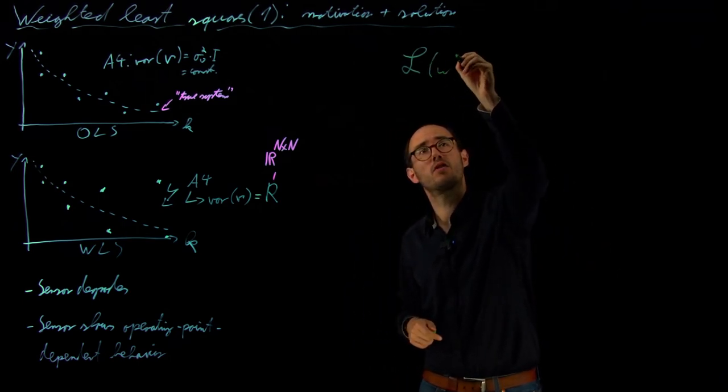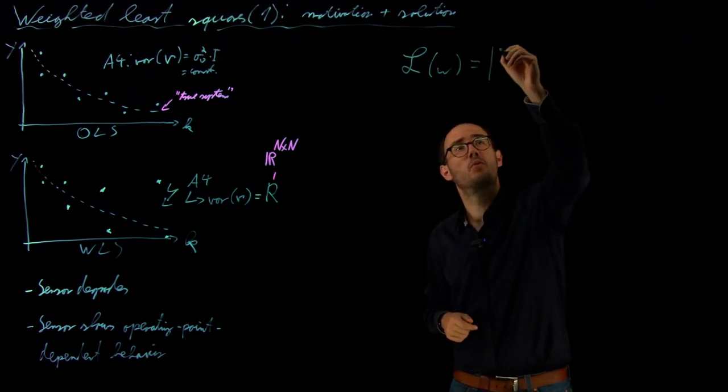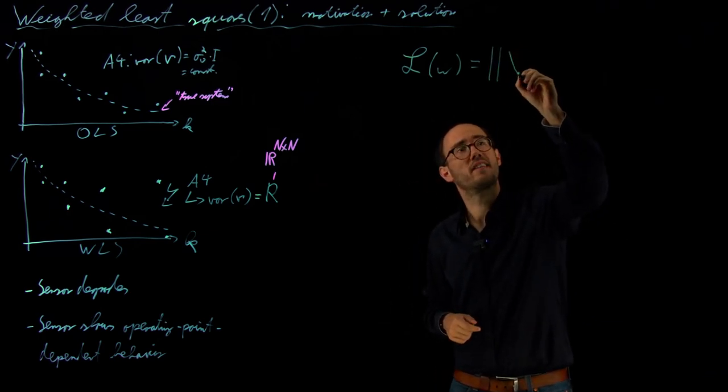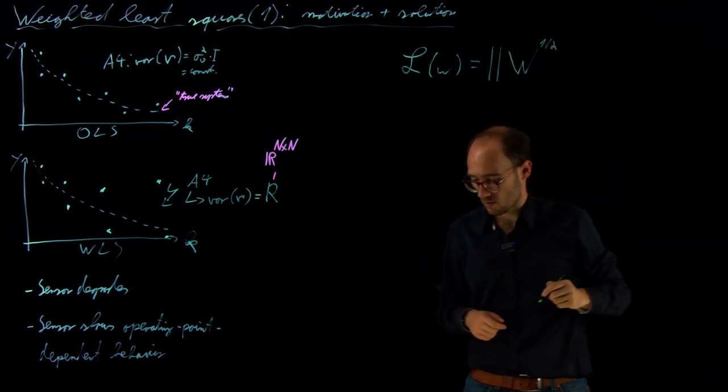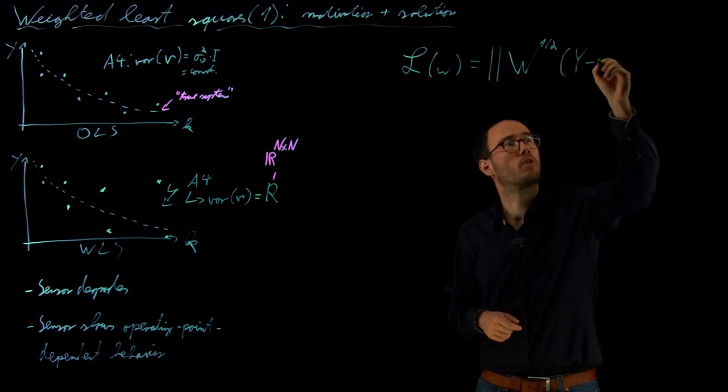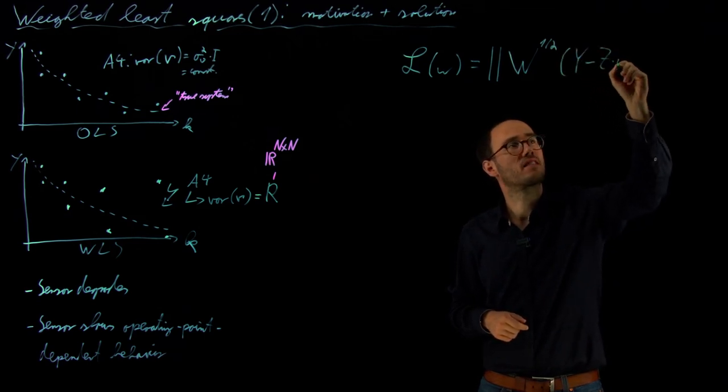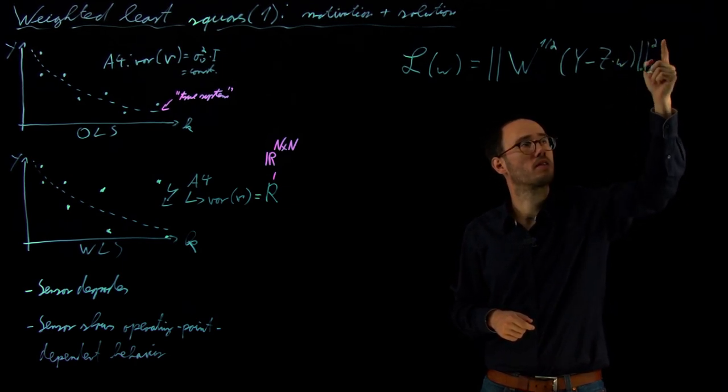And the new loss function is, as the name already suggests, a weighted loss with a weighting matrix W, or capital W, where we take here the matrix square root times our model error, model error Y minus Z times W, again in the 2-norm, or quadratic 2-norm.